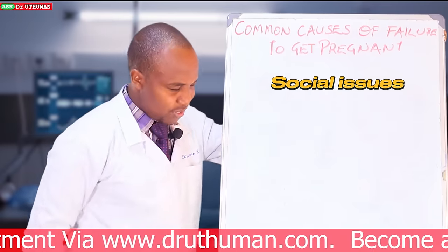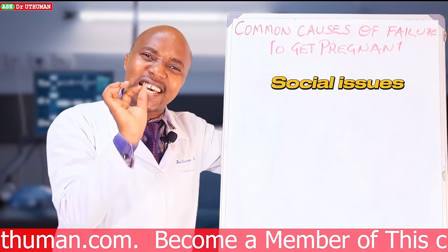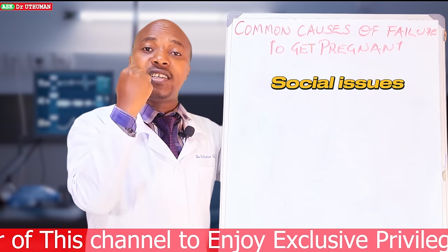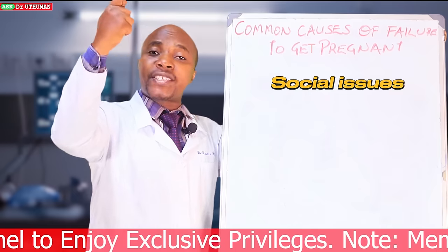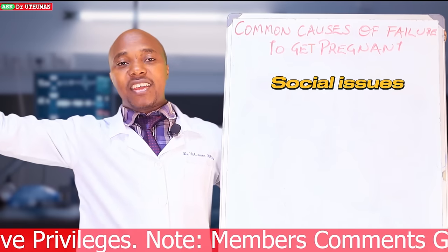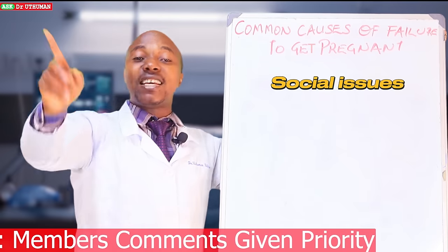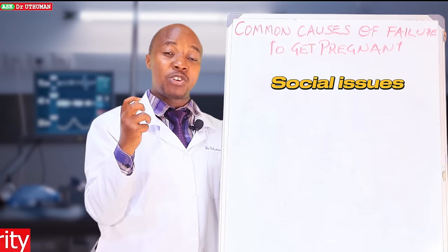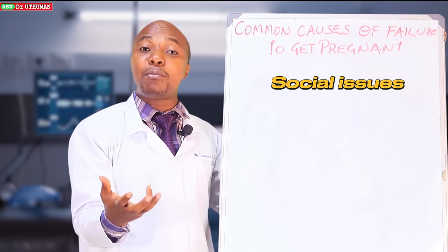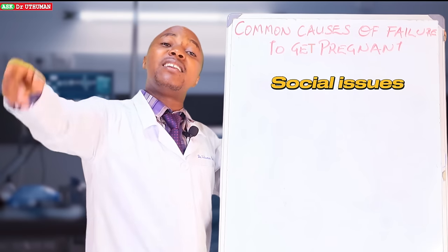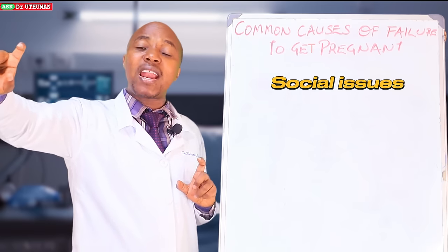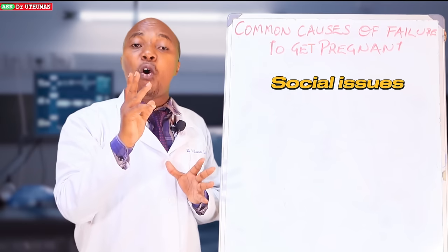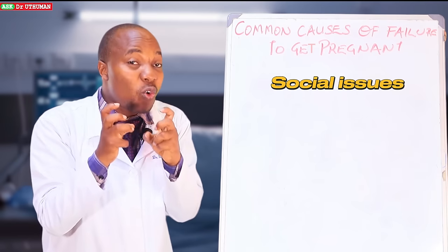When we talk about social issues, before you start thinking that everything has failed, there are some simple things you need to look at. Social issue number one: long-distance relationships. One partner stays in America and the other stays in Nigeria, or one is in Kampala, Uganda and another is in Tanzania. Even within the same country, if partners are 100 to 200 kilometers apart and meet only once a month or once a week, that can cause infertility.